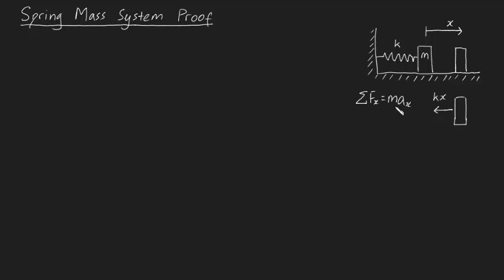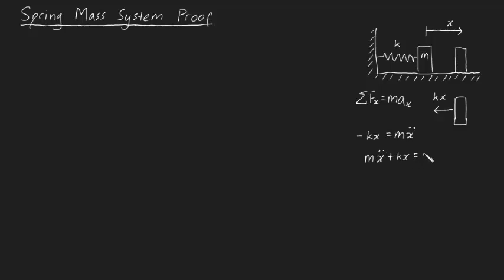Now what's the sum of forces? We only have one and it's going to be minus kx — it's minus because it's towards the left. And that's going to be equal to your mass times your acceleration. But your acceleration can be written as your double derivative of your displacement, so we're going to write this as x double dot. So if you rearrange this equation, the equation of motion boils down to mx double dot plus kx equals zero, which is a second order differential equation.